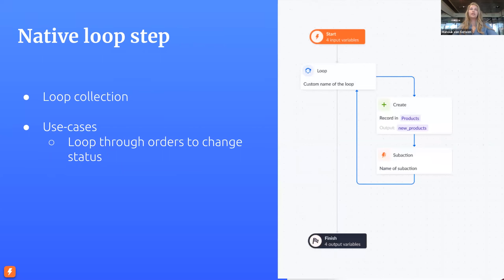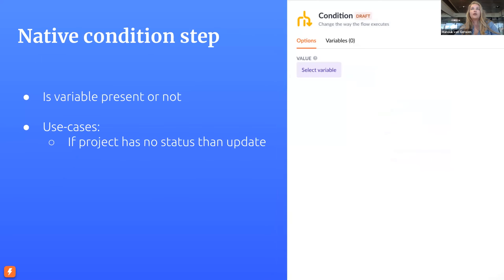The next item is the native loop step — to loop through a collection, for example all your orders to change their status. We're going to add this as a no-coder step as well. Also, a condition step is coming — this will be an MVP version first, where you can select a variable and the condition step will check if it's present or not. Later we'll add more features like filtered rows so you have more possibilities to filter your condition variable.